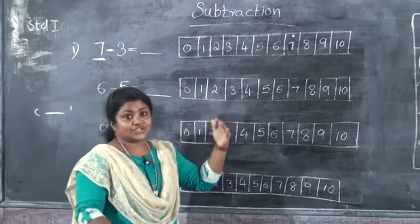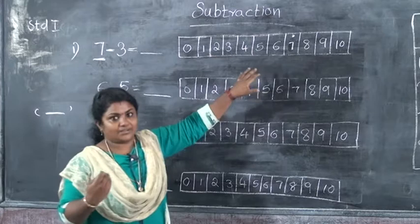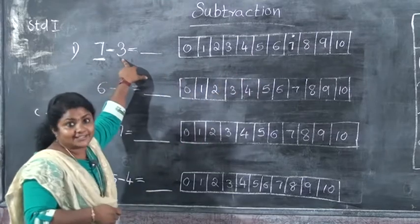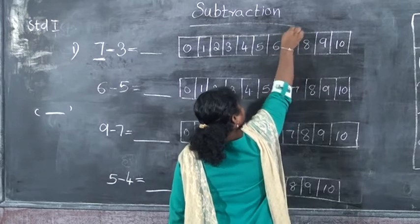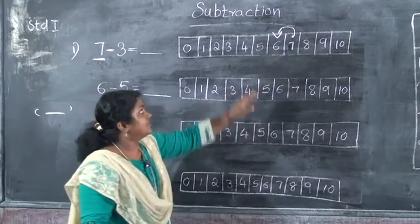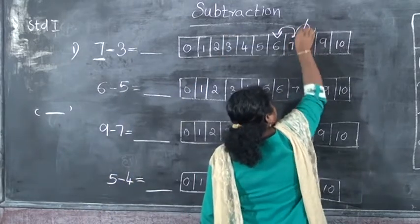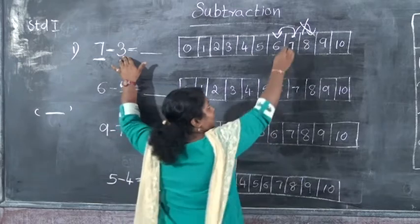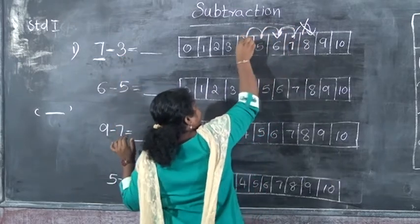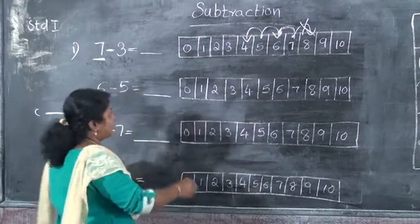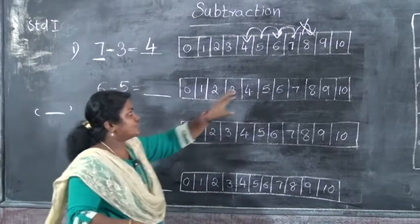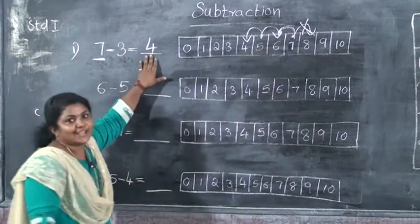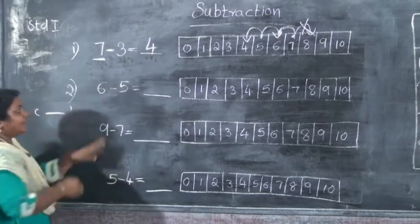We have to jump 3 times. In addition we jumped forward, but here we are jumping backward. So we start from 7 and jump to this side — the back side. Don't jump forward; that is wrong. We have to jump backward. How many jumps? 3 jumps: 1, 2, 3. And where do we reach? We reach at position 4. So the answer is 4. We jumped from 7 and took 3 jumps backward: 1, 2, 3 — answer is 4.